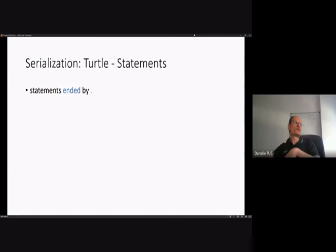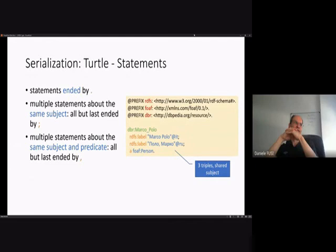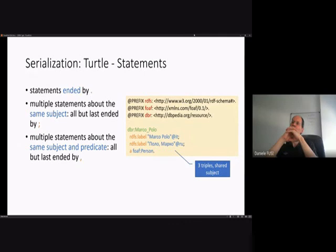All statements end with a full stop. When we have multiple statements about the same subject, they can be separated by a semicolon, with only the last one ending in a full stop. When we also share the predicate, we use a comma. So for Marco Polo as subject, three triples all sharing that subject are delimited by semicolons, with a full stop at the end of the block.